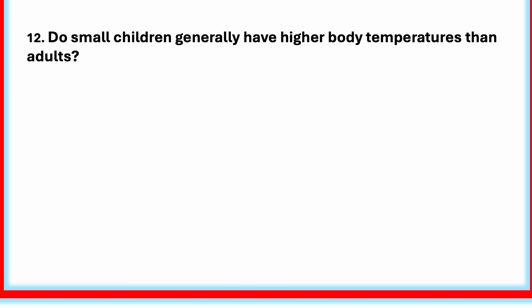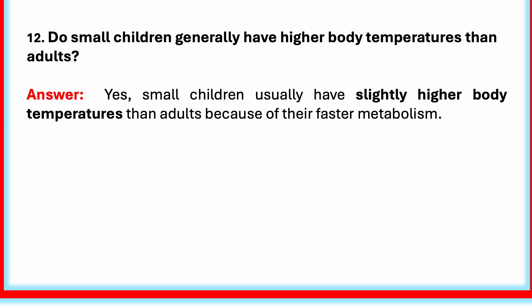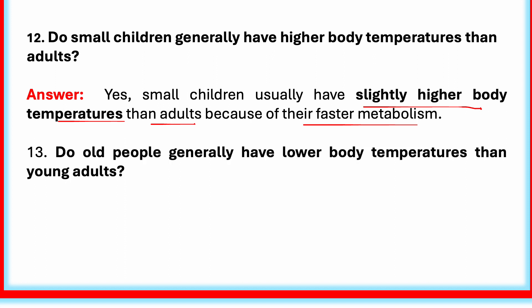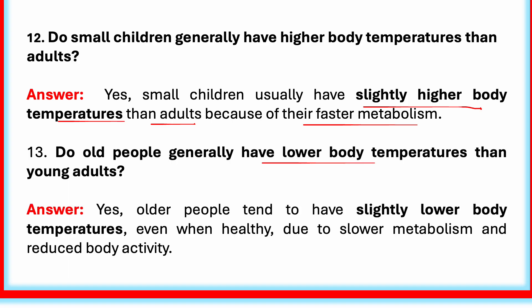Do small children generally have higher body temperature than adults? Yes, small children usually have slightly higher body temperatures than adults because of their faster metabolism. Metabolism means all the chemical activities that happen inside our body to keep us alive and healthy — how our body uses food to get energy to grow, play, work and repair itself. Do old people generally have lower body temperatures than young adults? Yes, older people tend to have slightly lower body temperatures even when healthy, due to slower metabolism and reduced body activity.